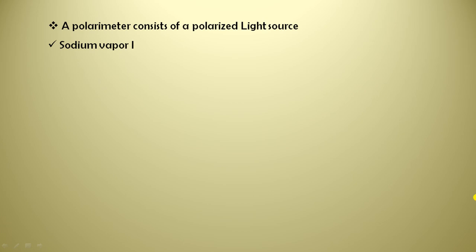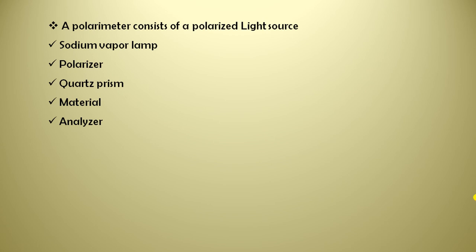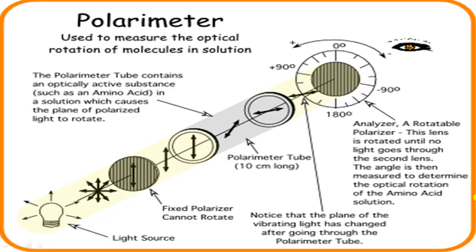A polarimeter consists of a polarized light source — a sodium vapor lamp — then a polarizer, a Quartz prism, and an analyzer. The polarimeter tube is 10 centimeters in length. This is the diagrammatic presentation of your polarimeter.